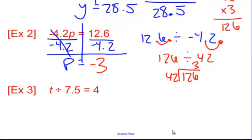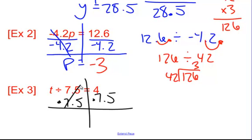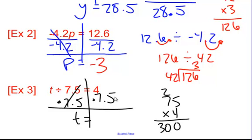Here, we have t divided by 7.5 equals 4. Since it's division, we need to multiply by 7.5 on both sides. Now, that cancels. We're left with t. So when I do 7.5 times 4, I actually am going to do 75 times 4. 4 times 5 is 20. Carry the 2. 4 times 7 is 28. Plus 2 is 30.